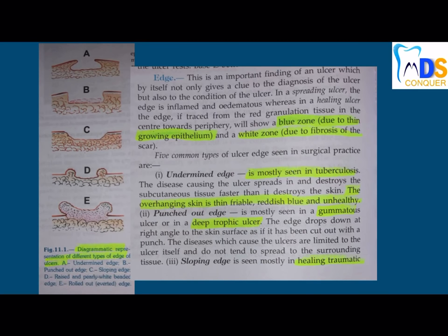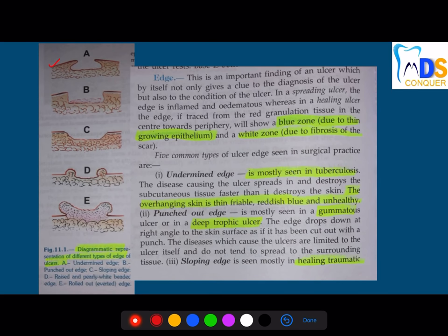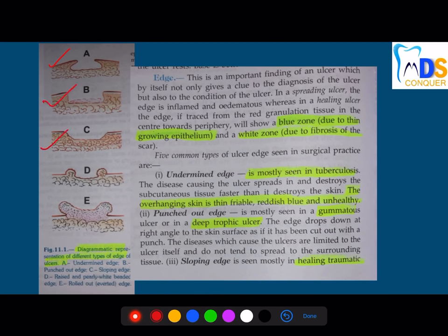Next comes the edges. I hope most of you are familiar with these diagrams — they can ask a diagram-based question. Type A is undermined edge; B is punched-out; C shows a sloping edge; D is raised edge; and E is rolled and everted edge.